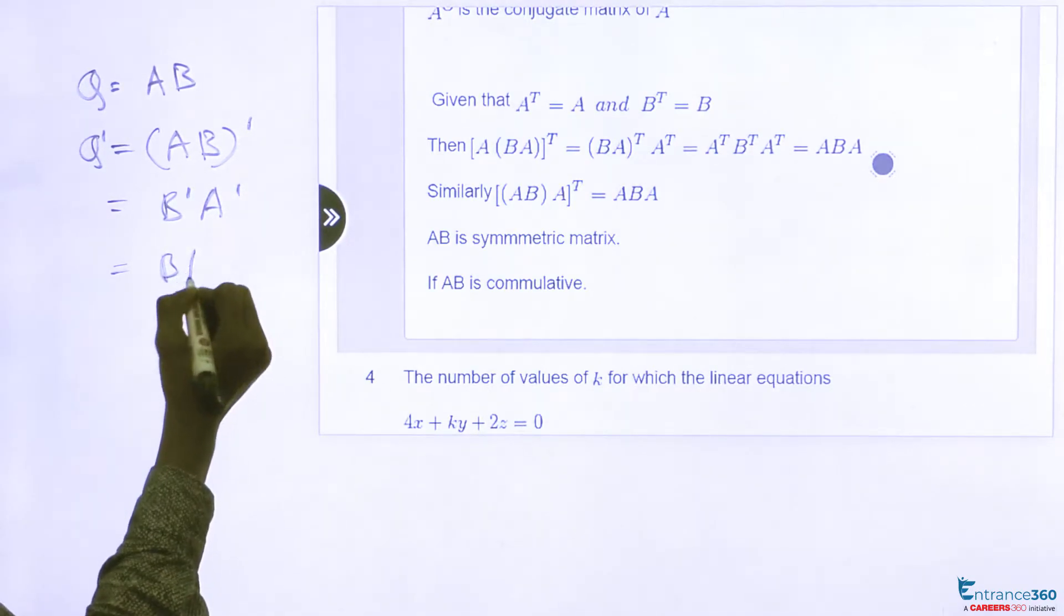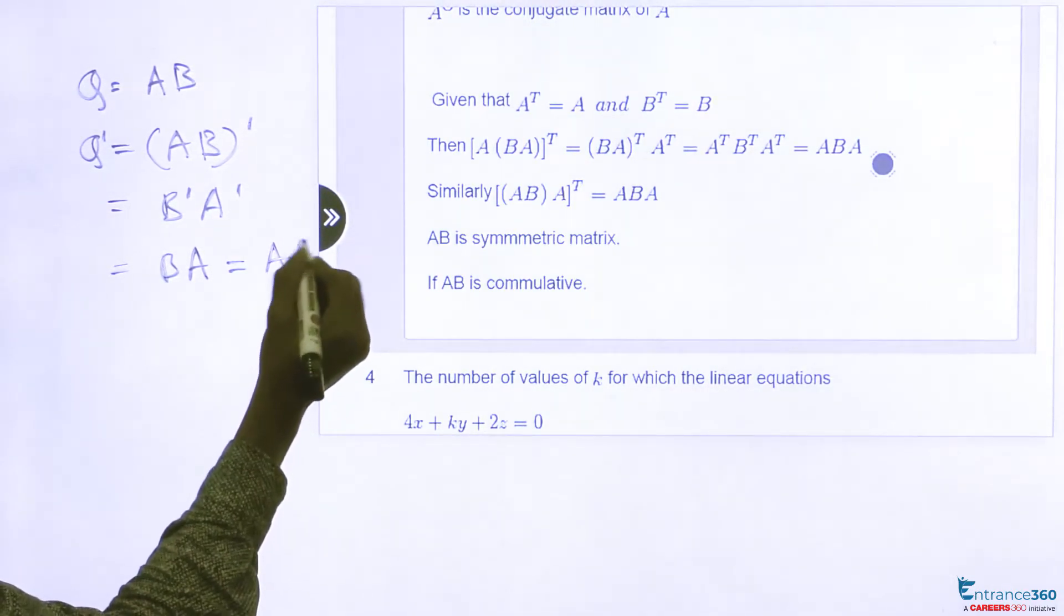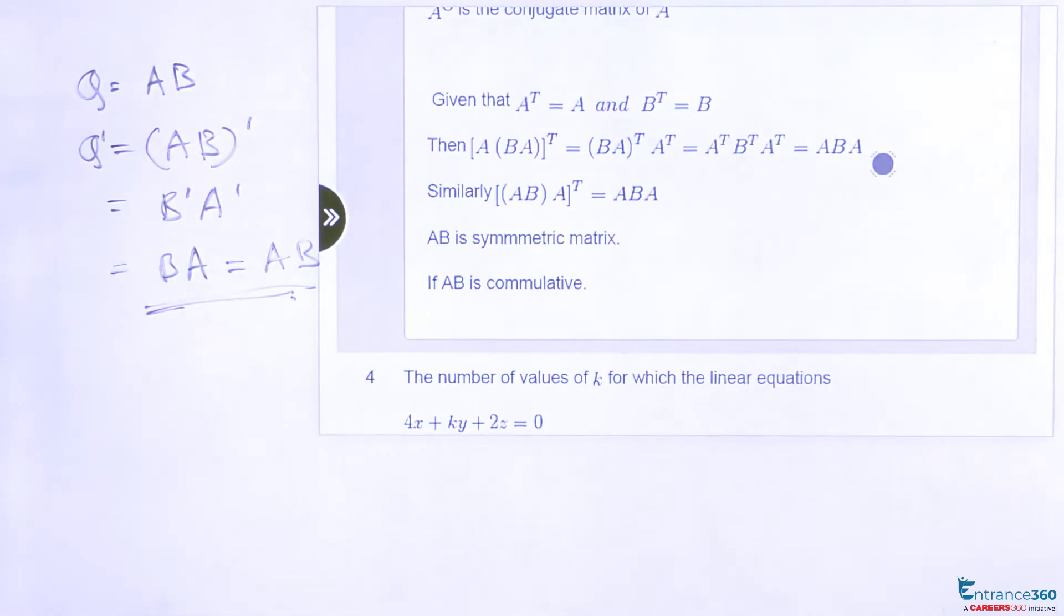then this will be B, this will be A or we can also write this as AB. So this is commutative. So statement 2 is also true.